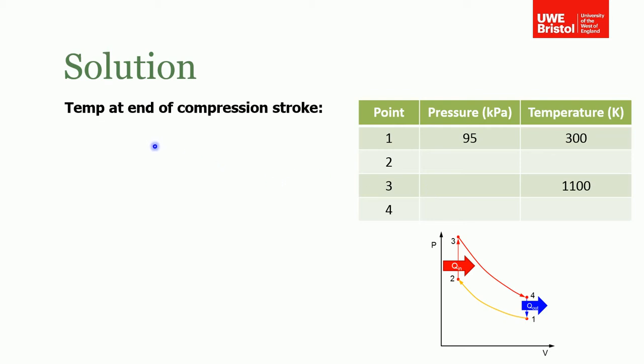First of all, you were told to find the temperature at the end of the compression stroke. You can do that by recognizing that between one and two is a polytropic process, so you know the temperature and volume are related like this from first year thermo. If you rearrange that, then you get T2 is equal to T1 times V1 over V2 as a function of gamma. Now you don't know anything about the volumes, but you do know their ratio. You know the V1 over V2 is the compression ratio, and that's nine point five.